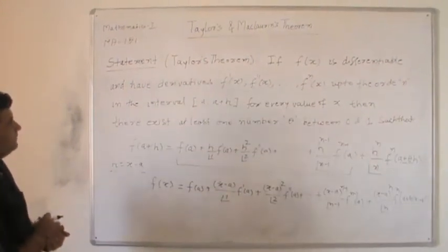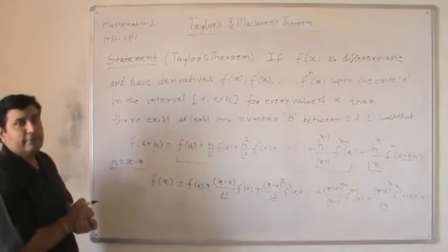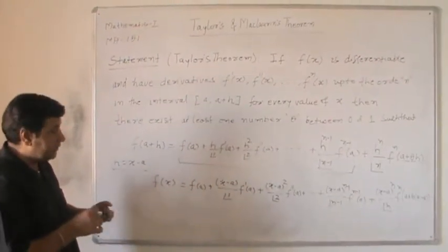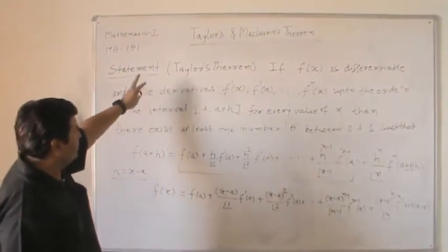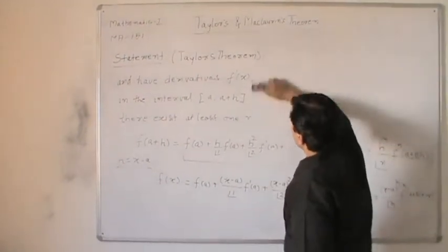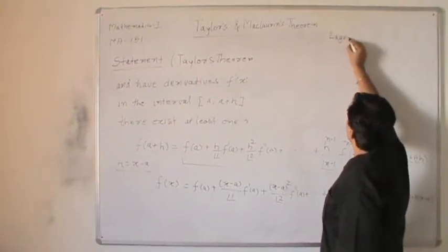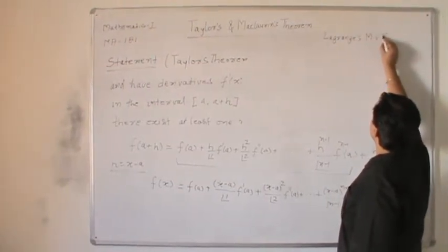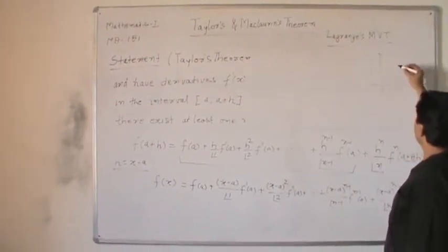Taylor's theorem was motivated from Lagrange's Mean Value Theorem, which you may have studied in 12th class. Lagrange's Mean Value Theorem is a very interesting theorem. It says that if we have a curve and a and b are the endpoints of an arc of the curve,